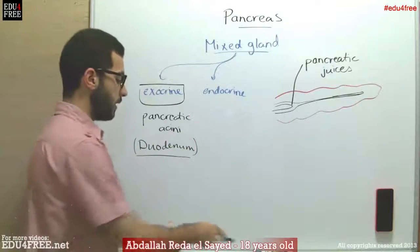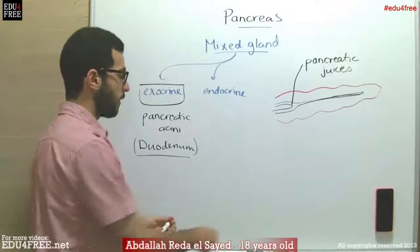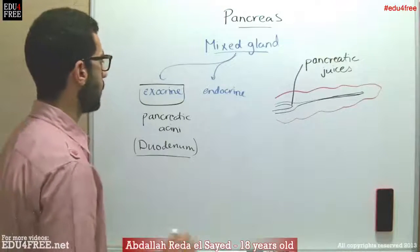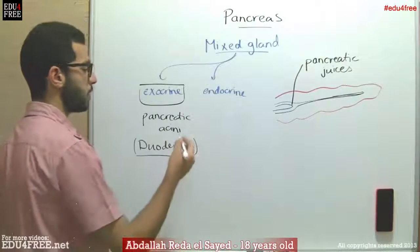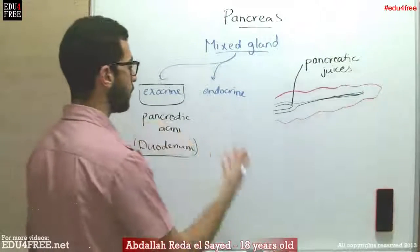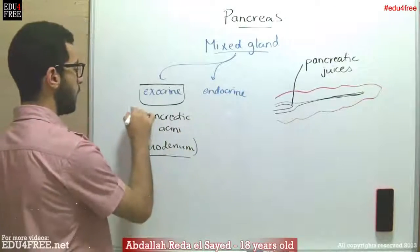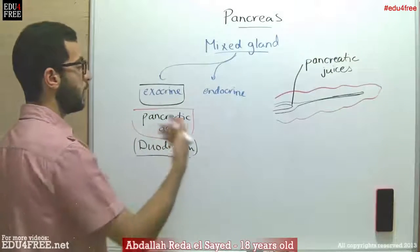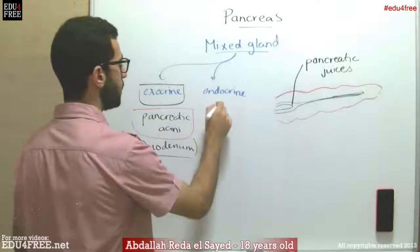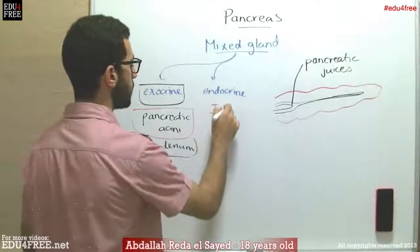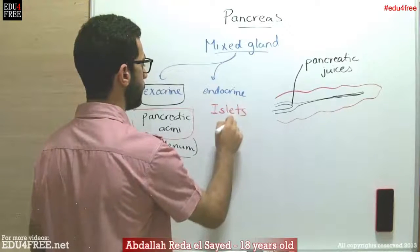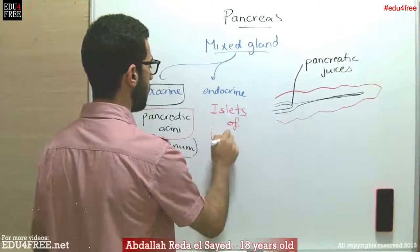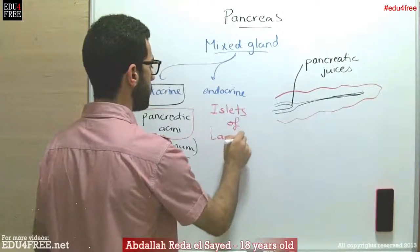The endocrine function, on the other hand, is carried out by another group of cells different from the acini, which is called the islets of Langerhans.